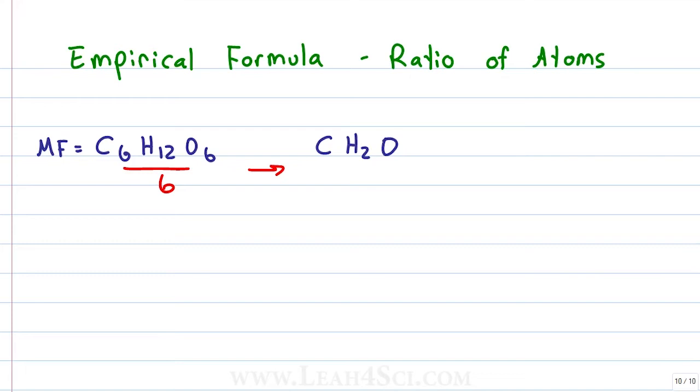Does this mean that anytime you see the empirical formula CH2O, it has to be glucose? Absolutely not. Let's look at the molecule methanol which you'll recognize as formaldehyde. This is used in a lot of different things like embalming fluid and resins. If we draw the molecular formula, we have 1 carbon, 2 hydrogens and 1 oxygen. The molecular formula for formaldehyde is CH2O. If we look at the numbers and try to divide by the greatest common factor, well carbon and oxygen each have just 1. That means the only number we can divide by is 1. In this case, the molecular formula happens to be the same exact ratio as the empirical formula.